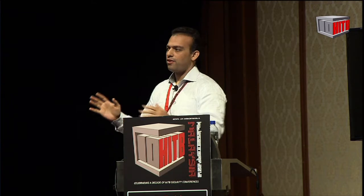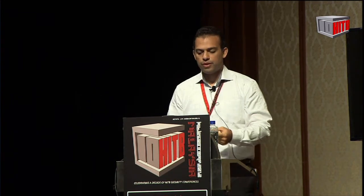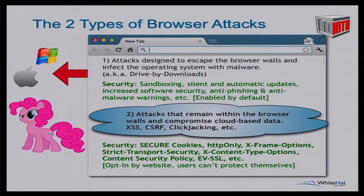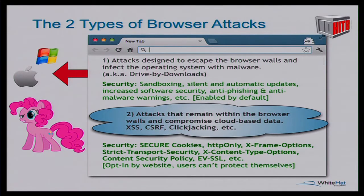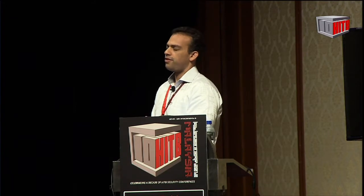Then there are the other web attacks — the ones that stay within the browser walls. This is where attacks like cross-site scripting, cross-site request forgery, clickjacking, and a billion other variants operate, quite content to stay within the browser and get data in the cloud. The security features for these — secure cookies, the secure flag, HTTP only, X-frame options, strict transport security, X-content type, and other security headers — are opt-in by the website owner. For the user to benefit, the website must opt-in, and most of the time they don't, so they don't really provide a way for users to protect themselves.